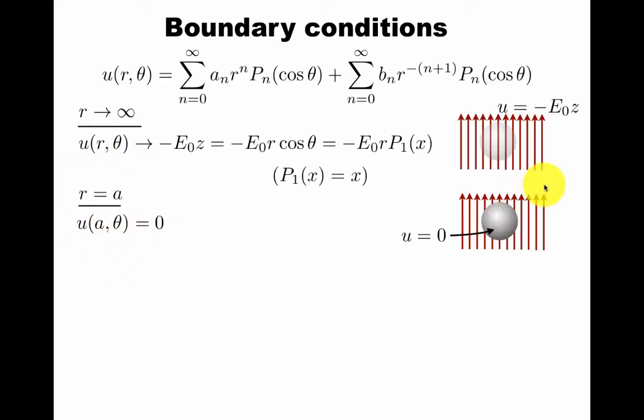This is the boundary condition for U at infinity, and this is the boundary condition at R equals A. You should think of two places: infinity and the surface. You're imposing, in this case, Dirichlet boundary condition. You're setting the value at these two places.